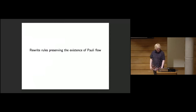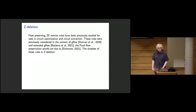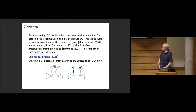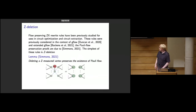Now we talk about rewrite rules preserving the existence of Pauli flow. This has been studied in the context of g-flow by Duncan et al. in their paper on graph-theoretic simplification of quantum circuits using the ZX calculus, then by Backens et al. in the circuit extraction paper, and generalized to Pauli flow by Will Simmons at QPL last year. The simplest rule is Z-deletion: given a Z-measured qubit, we can simply delete it without affecting the interpretation of the diagram, and this preserves the existence of Pauli flow.